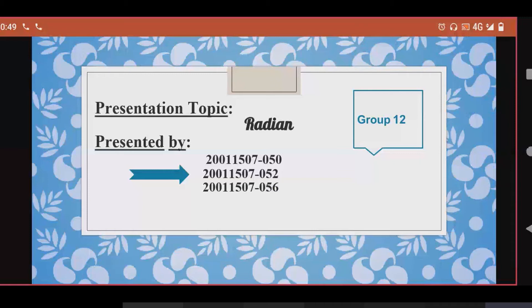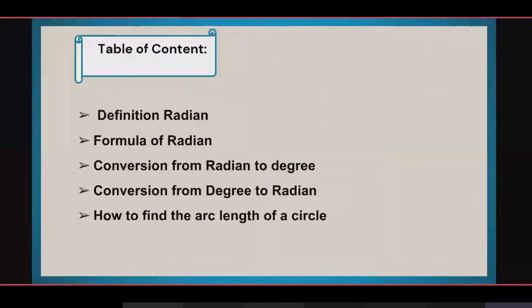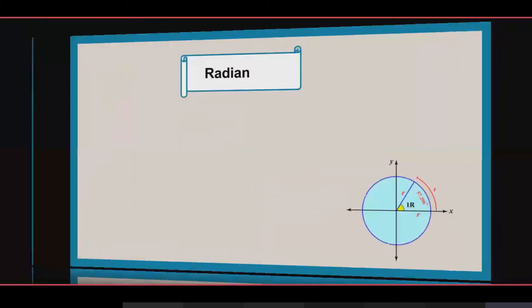Aisha Tika, roll number 50; Fatma Tuzahra, roll number 52; and Muqadr, roll number 56, are here to give a presentation on the topic of Radians. We will discuss: what is a radian, the formula, how to convert from radian to degree, how to convert from degree to radian, and how to find the arc length of a circle.